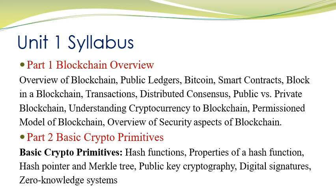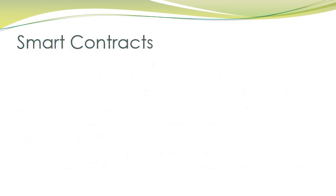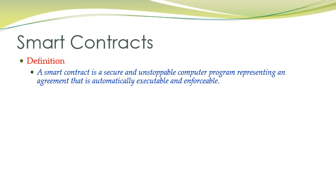Starting our revision: a smart contract is a secure and unstoppable computer program representing an agreement that is automatically executable and enforceable. This program checks whether certain conditions are met, and if they are met, it allows the transaction. Whenever any transaction is initiated, this computer program automatically verifies the business conditions to see whether they are fulfilled, and if so, it enforces and allows the transaction.